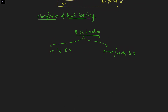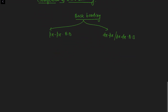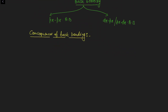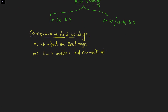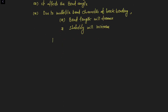The consequences of back bonding are as follows. The first consequence is that it affects the bond angle. The second consequence is that due to the multiple bond character of back bonding, bond length will decrease, and because of this decrease in bond length and increase in multiple bond character, the stability will increase.